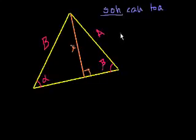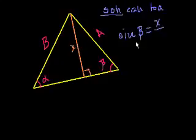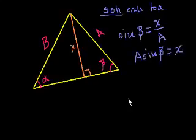So it's equal to this opposite, which is x, over the hypotenuse, which is a in this case. And then if we wanted to solve for x, I'll just do that because it'll be convenient later, we can multiply both sides of this equation by a. And you get a sine of beta is equal to x. Fair enough. That got us some place.